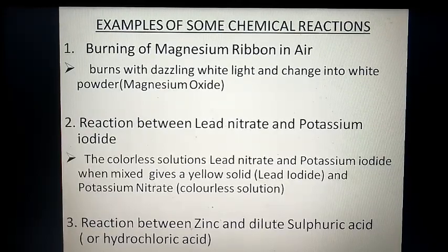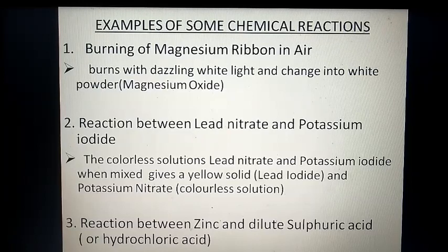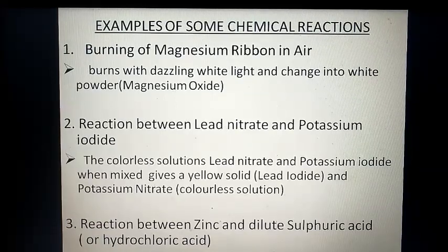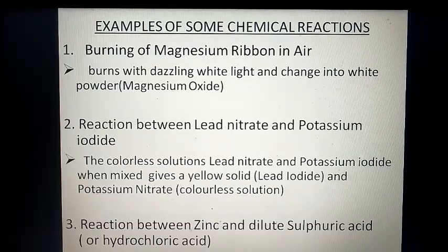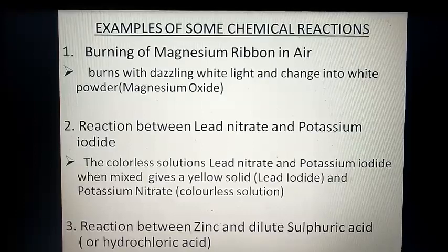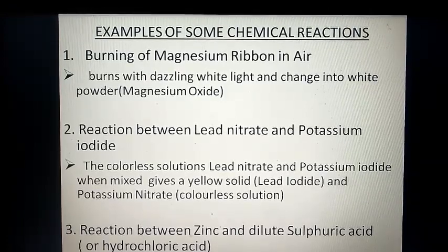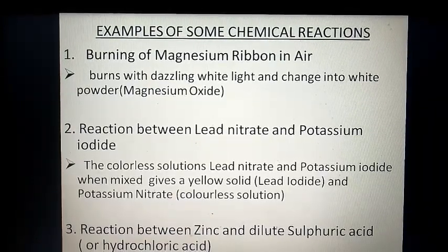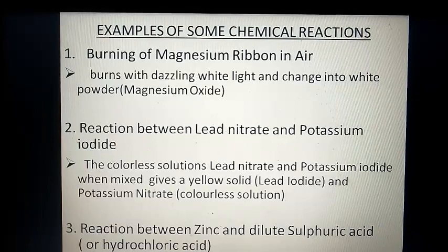Now, second example is reaction between lead nitrate and potassium iodide. Lead nitrate is a colorless solution we take in a test tube. And in another test tube, potassium iodide, which is also a colorless solution, we take. When we mix these two solutions, we observe that a yellow solid formation occurs. This yellow solid is called a precipitate. This is a chemical compound which is called lead iodide. Also potassium nitrate forms, but potassium nitrate is colorless. So basically what is the reaction? Lead nitrate and potassium iodide react to give lead iodide and potassium nitrate. So this is also a chemical reaction.